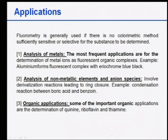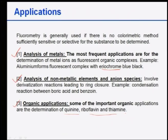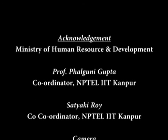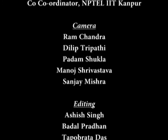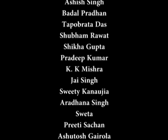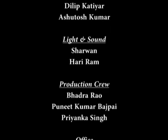Applications of fluorometry: generally used when no colorimetric method is sufficiently sensitive or selective for a substance. Most frequent applications include determination of metal ions as fluorescent organic complexes (e.g., aluminium forms a fluorescent complex with eriochrome black blue), analysis of non-metallic anionic species (e.g., condensation between boric acid and benzoin), and organic applications such as quinine, riboflavin, and thiamine determination. With this, the discussion on photoluminescence spectroscopy is closed; next class will cover Raman spectroscopy.